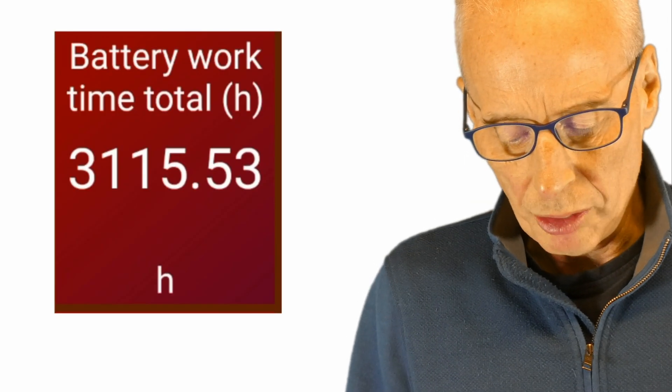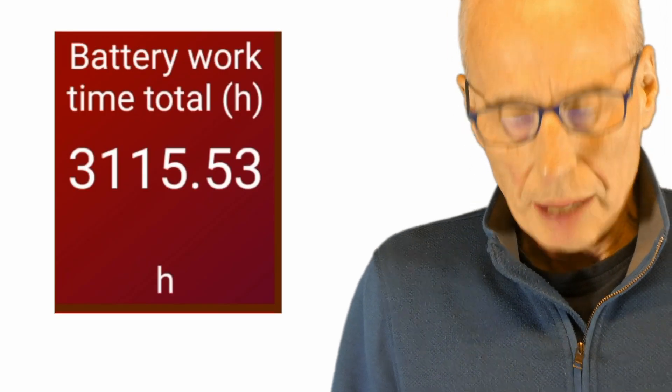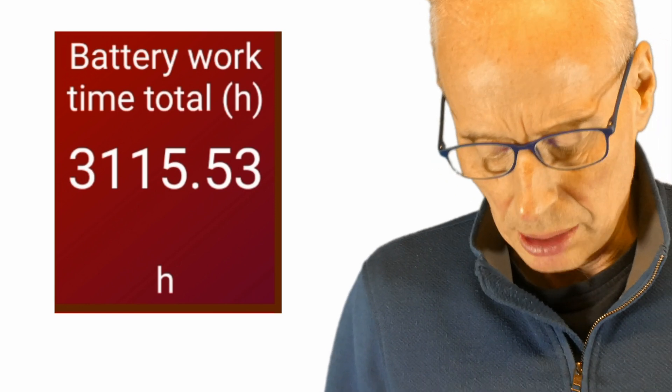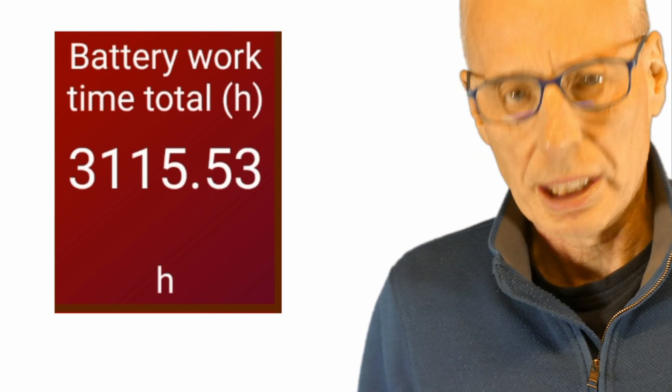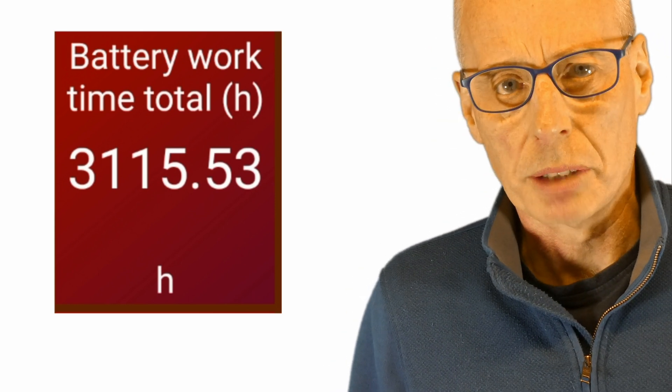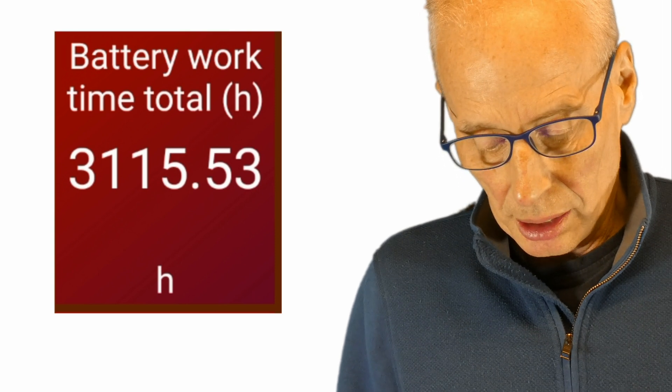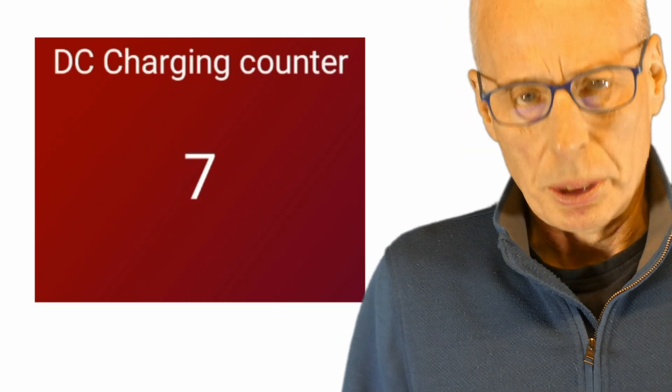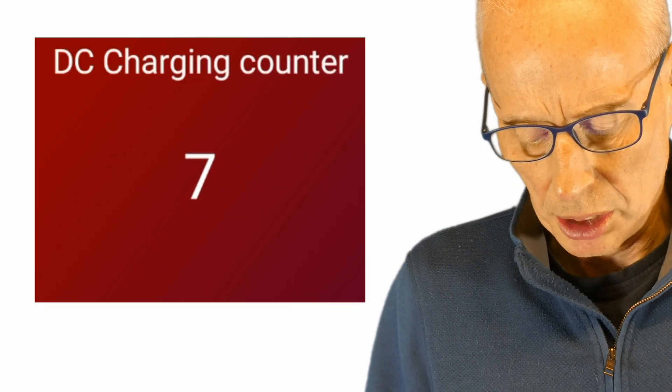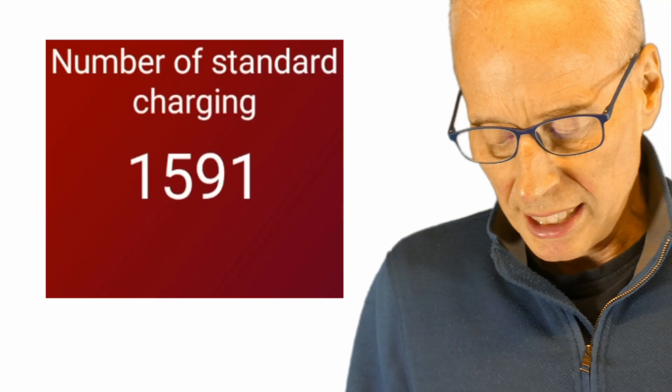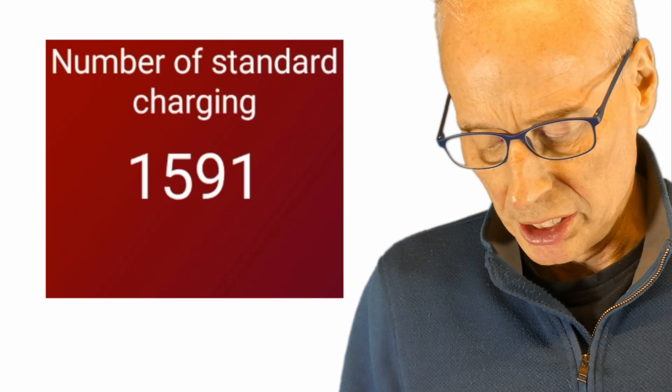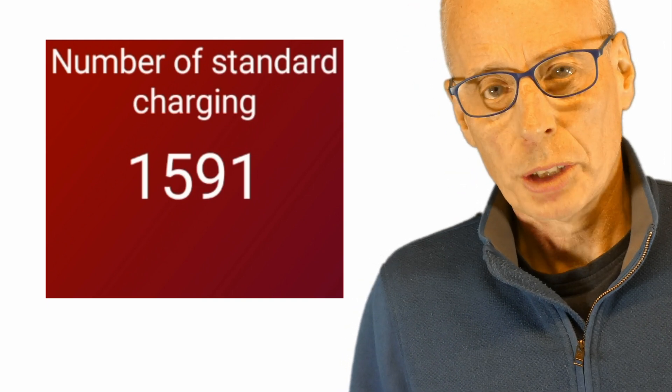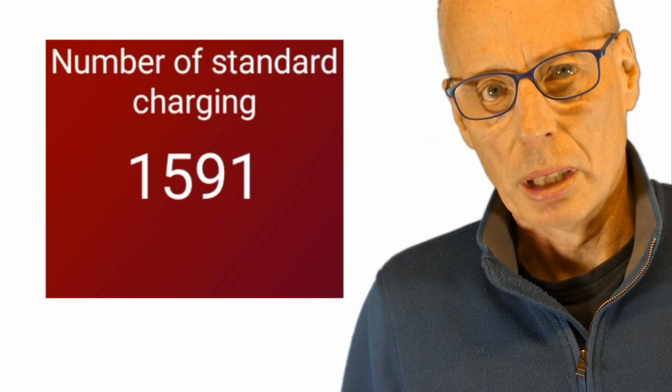Battery work time is 3,115 hours and that would also include the vehicle-to-load use which I've also used quite a lot but there is no counters I can find in car scanner to tell me how much I've used. The number of quick charges was 12, there were 7 DC charges, they must be slow DC charges not fast charges, and the number of standard AC charges was 1,591. Because most of that was done at home on my Zappi charger off solar power, it's all the stops and starts otherwise it'd be a lot lower.